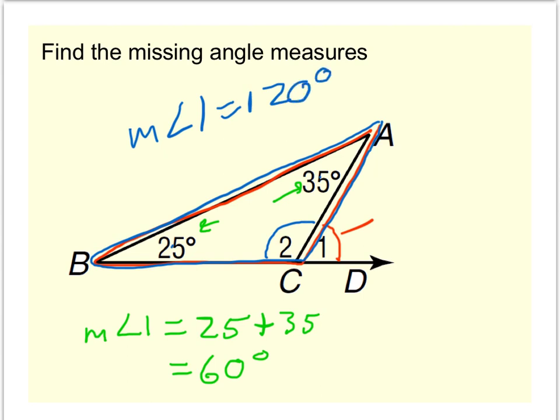Another way, if you want, is to look at angles 1 and 2 together, and they form a linear pair. Since angle 1 is equal to 60, I know angle 2 must equal 120, because linear pairs are supplementary. In other words, they form 180 degrees.